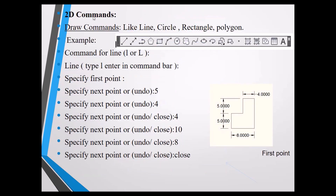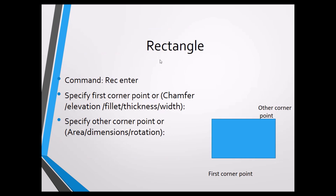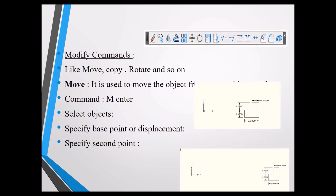For a 2D Line example: type L Enter, specify the first point, then enter subsequent distances (e.g., 5, 4, 4, 10, 8) at each next-point prompt, and type Close to finish. For Rectangle: type REC Enter, specify the first corner and then the opposite corner to draw the rectangle. For Move: type M Enter, select the object, specify the base point, then specify the second point — the object moves from the base point to the second point.